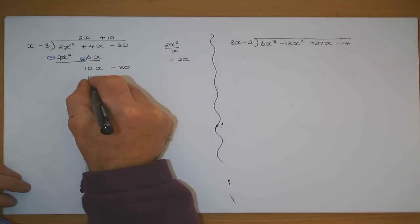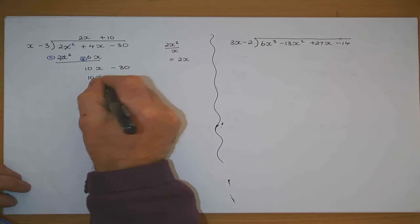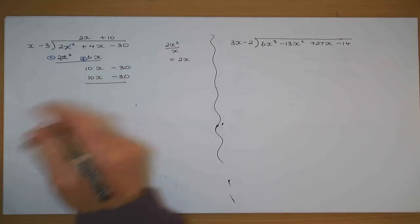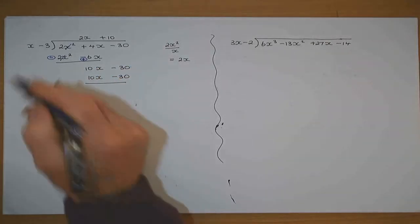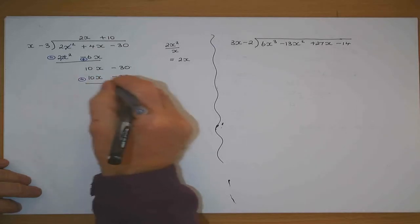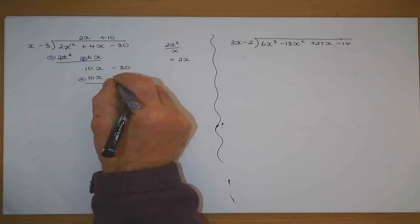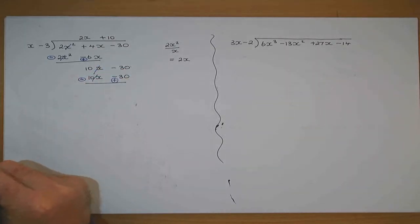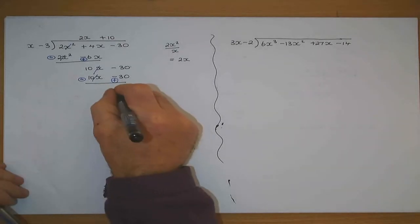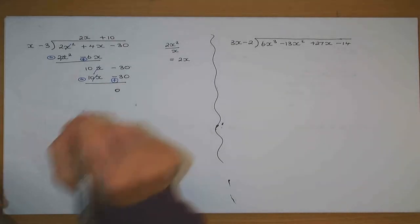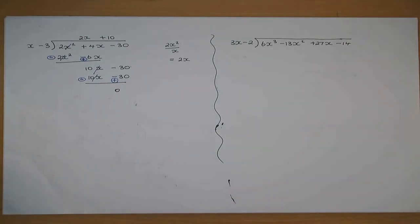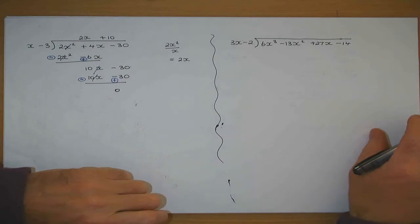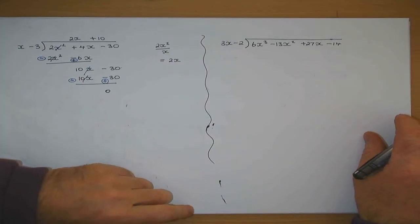10 by x, then 10 by minus 3. Change the sign on the lower line and add — it becomes a minus, that becomes a plus. They cancel. 30: minus 30 plus 30. Junior short honors — just the exact same procedure except one step longer.